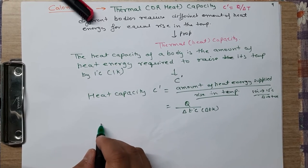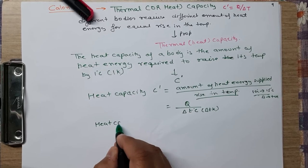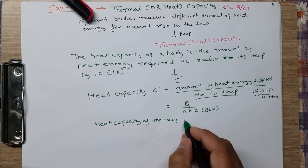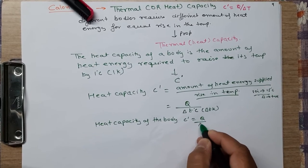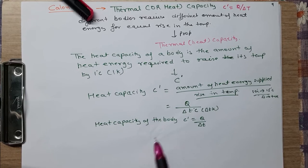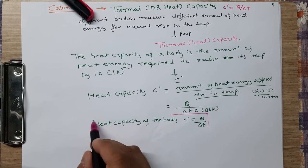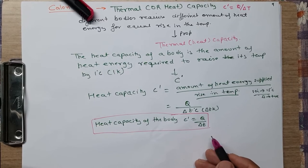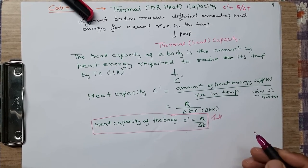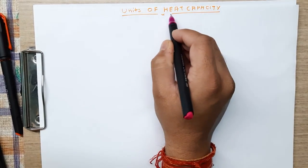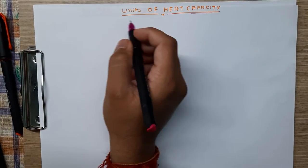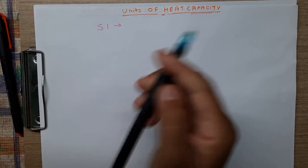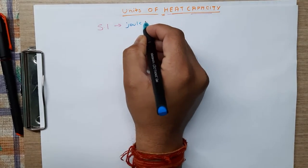The formula for heat capacity of a body is C prime equals Q divided by delta T. This is a very important formula used in many places. Let me mark it in a red box. Now let us look at the SI unit of heat capacity.